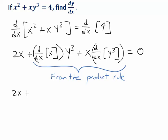I have 2x plus the derivative of x with respect to x. So d/dx of x is just 1. And then I have x times the derivative of y cubed. And this is where we use the chain rule, treat y as a function of x. So the derivative of y cubed with respect to x should be 3y squared times dy/dx.